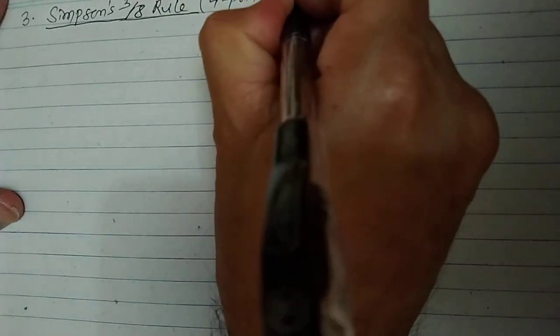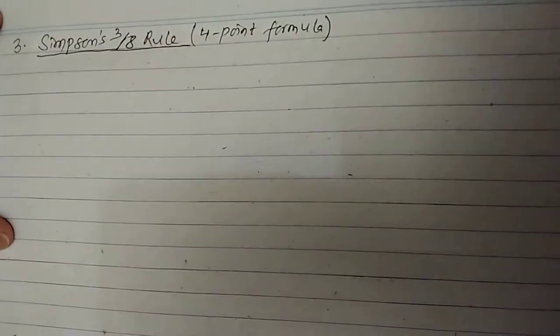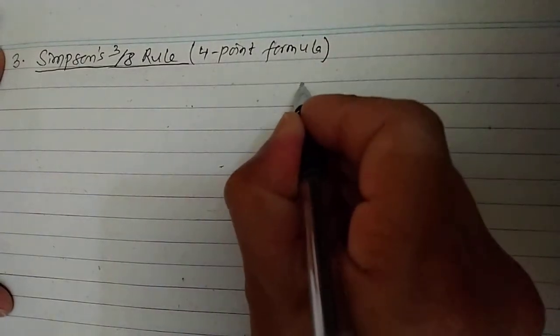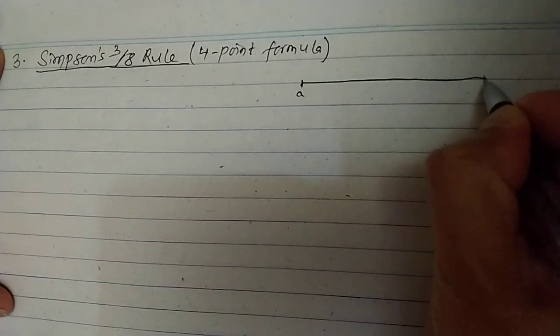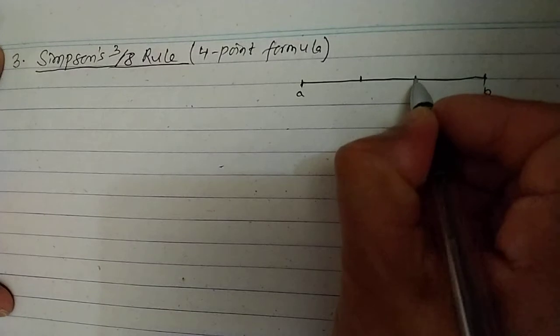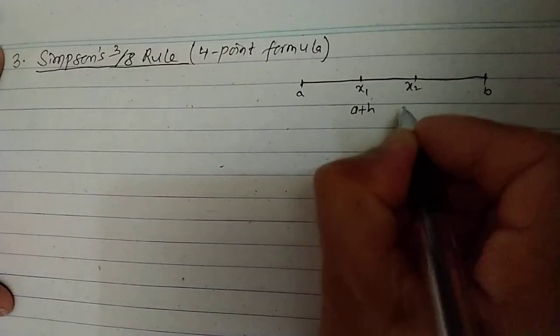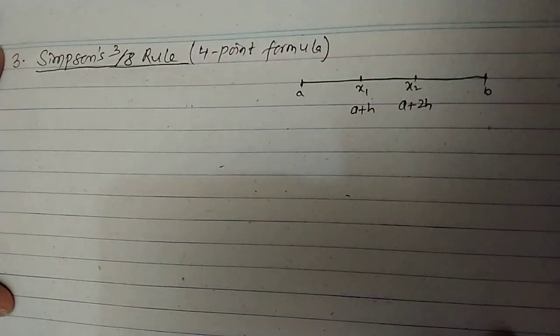Simpson's 3/8 rule is also known as the four-point formula. In the four-point formula, you are given the limits of integration as a and b, with two more points x1 and x2, where x1 equals a plus h and x2 equals a plus 2h. In this case, the number of line segments is three.